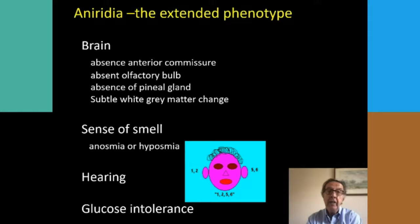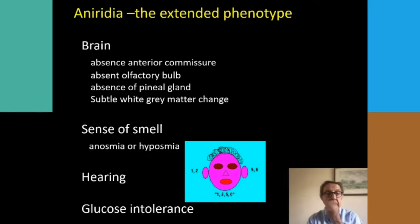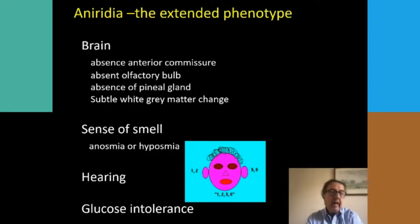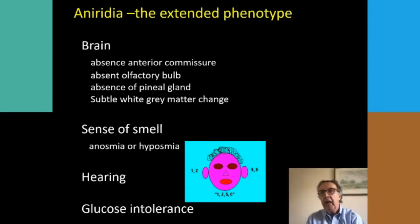It highlights the fact that the anterior commissure is used to integrate information from the two ears. There is also now more literature looking at the role of Pax6 on the pancreas, and it's shown that many patients with aniridia have abnormal glucose intolerance. We don't yet know whether there's an increased risk of diabetes, but this needs further work.